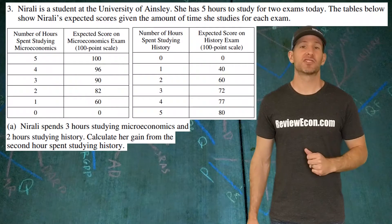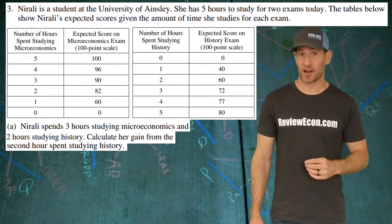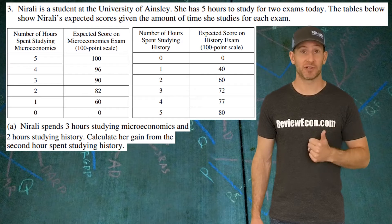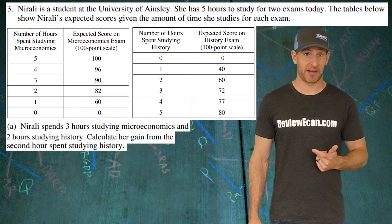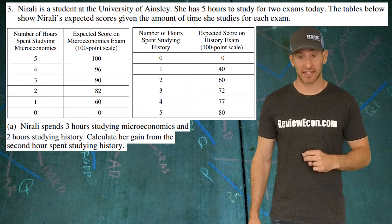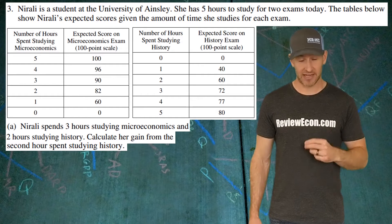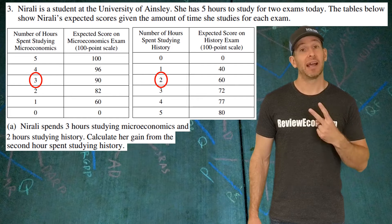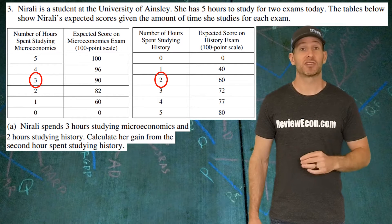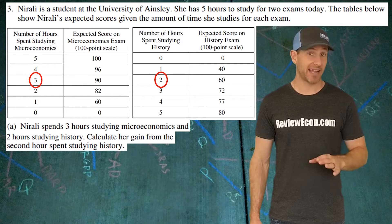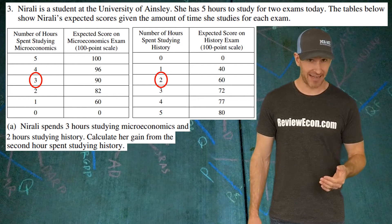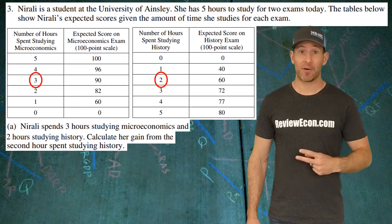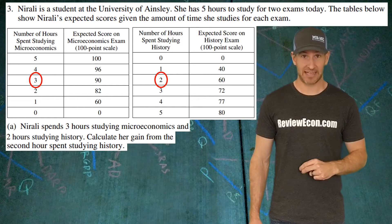This question starts off with Nirali. Nirali has five hours to study either history or economics. Currently she is studying three hours of economics and two hours of history. Question A has us calculate the gain from the second hour of studying history.